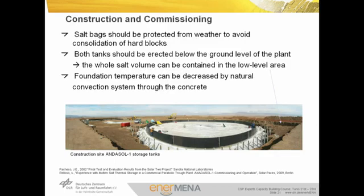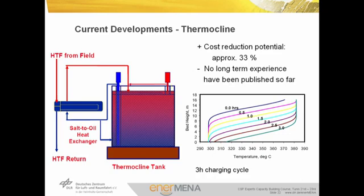Specific aspects must be considered during the construction of the tanks and foundations. Molten salt is delivered in large bags which must be stored near the construction site, and care must be taken to avoid consolidation into hard blocks. Both tanks should be erected below ground, since in case of leakage the whole salt volume should be contained in the low-level area. The concrete foundation should not be at temperatures exceeding 100 degrees, so the temperature can be decreased by natural or forced convection systems. The main costs of a two-tank molten salt system result from the cost of the molten salt, and an alternative is to replace part of the molten salt with a cheaper filling material.